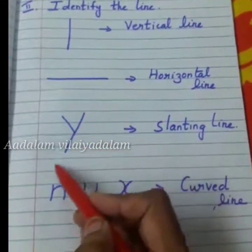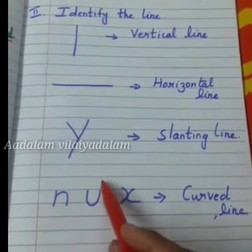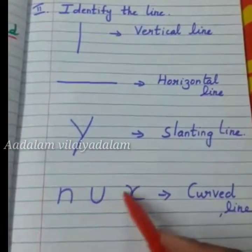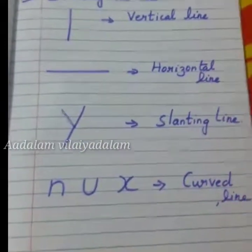This is a slanting line and this is a curved line. These are the four types of lines.